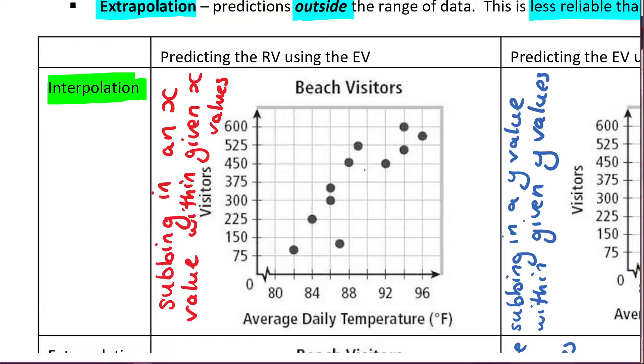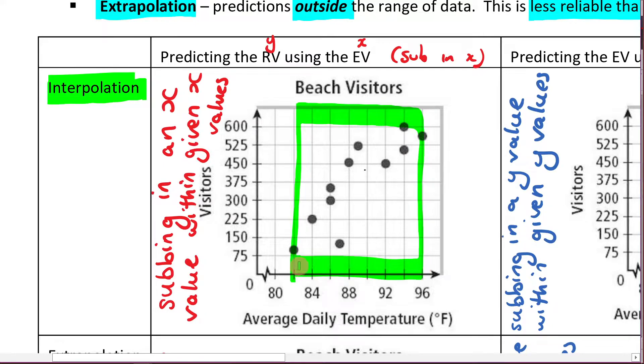And what we're going to do is we're predicting the response variable, which is y, using the explanatory variable, which is x. So in these examples, what we're doing is we're just subbing in the x value here. And because there's interpolation, you might like to write down this. Interpolation means that we're subbing in an x value within the given x value. So within is the key word there. That means we're just considering things within the range of the x values that we've been given. We're not going outside of that. So this is what we're considering right here.